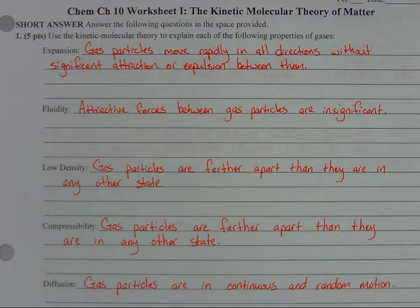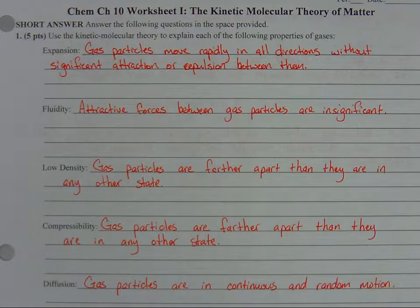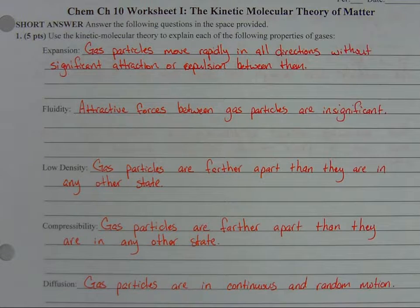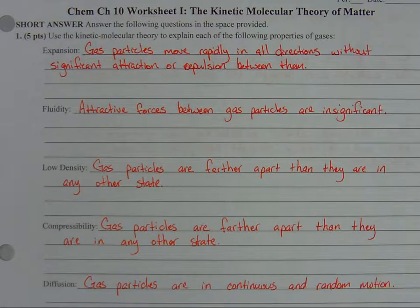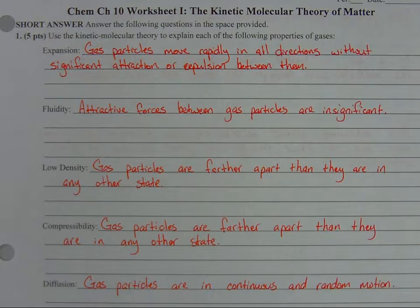Now, I'm not wanting you to list the properties of gases, and I'm not wanting you to list the five assumptions of the kinetic molecular theory. What I'm wanting you to do is draw the connection. A scientific theory is an attempt to explain why things are the way they are. Gases have these characteristics — they're observed, this is the way things are. Gases expand. Why do they expand? The kinetic molecular theory is an attempt to explain why gases expand. We're trying to use those assumptions to explain what we see in nature.